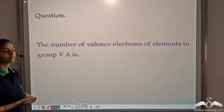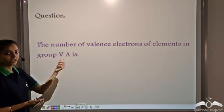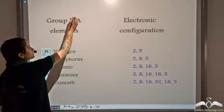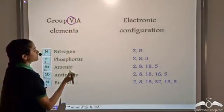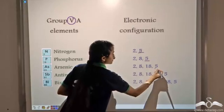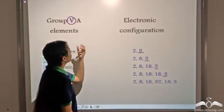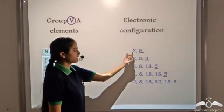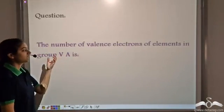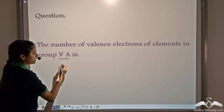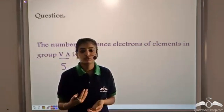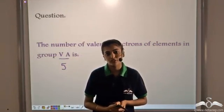What is the number of valence electrons of elements that belong to group 5A? We have seen that in each group, the group number is equal to the number of valence electrons. So the elements that belong to group 5A each have 5 valence electrons — all elements in group 5A have 5 valence electrons.